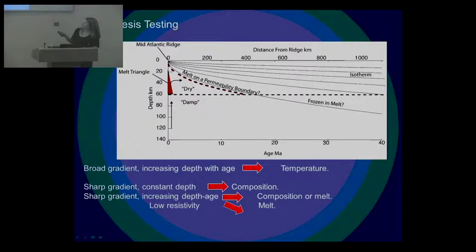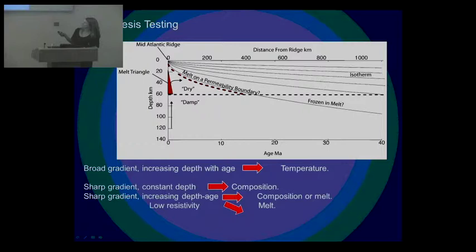So in conclusion, the lithosphere-asthenosphere boundary is defined by a mechanism such as hydration or melt in many locations globally. But some sharp discontinuities may be frozen in, particularly within the continents. Anisotropic fabric is really important and it influences our results. And it seems like by itself it's not a very simple thing to define all the things that we're seeing seismically, but it's certainly really important in understanding what we're seeing. So more detailed investigations are required for better understanding, especially including in-situ measurements beneath the oceans. So thanks.